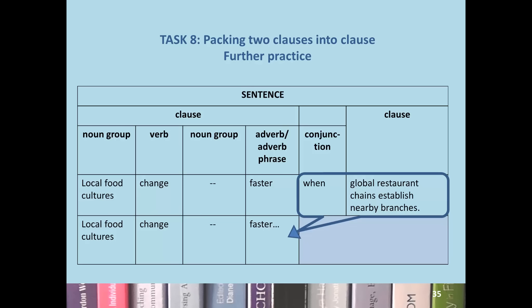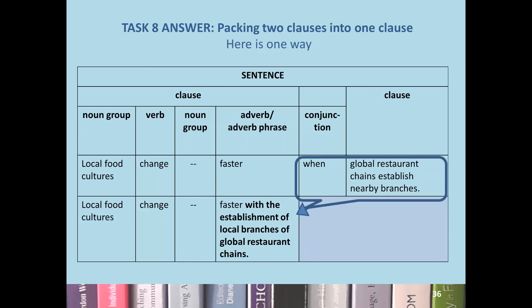Here's some further practice in packing two clauses into a single clause, using a sentence about local food cultures. 'Local food cultures change faster when global restaurant chains establish nearby branches' could be packed to 'local food cultures change faster with the establishment of local branches of global restaurant chains.' This is interesting because the packed version is just about as long as the unpacked version. The conjunction 'when' — expressing time and cause — gets packed into the preposition 'with,' and the verb 'establish' becomes the noun 'establishment.'